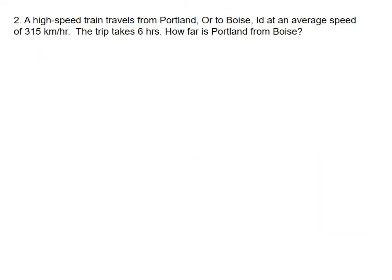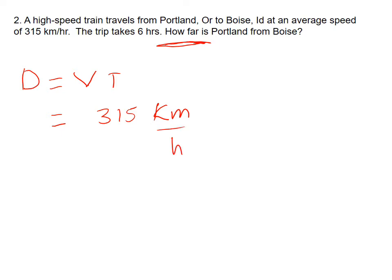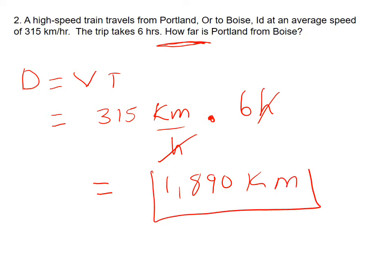Problem 2: A high-speed train travels from Portland, Oregon to Boise, Idaho at an average speed of 315 kilometers per hour. The trip takes six hours. How far is Portland from Boise? Since we're solving for distance, the equation is distance equals velocity times time. That's 315 kilometers per hour times 6 hours — the hours cancel — giving 1890 kilometers, which is our boxed answer.